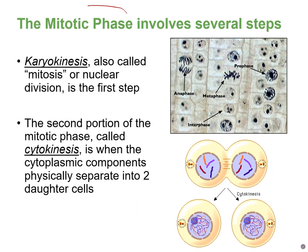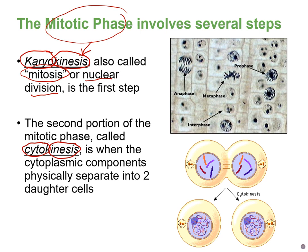The mitotic phase includes mitosis, which is nuclear division — also called karyokinesis, where 'karyo' refers to the nucleus — and then cytokinesis, which is division of the cytoplasm. In a plant cell, we can see that when the cell is not dividing, the nucleus is easy to see, but during mitosis the nuclear envelope breaks down. During cytokinesis, everything in the cytoplasm is replicated and separated into two new daughter cells.